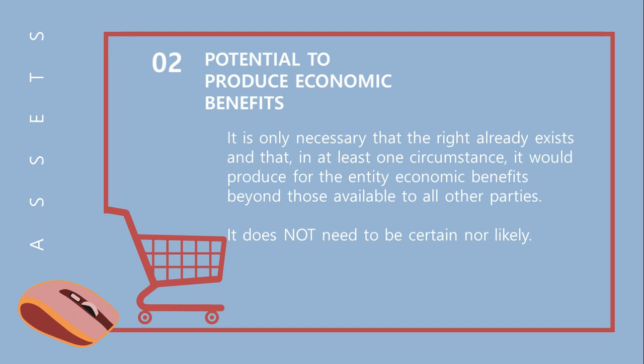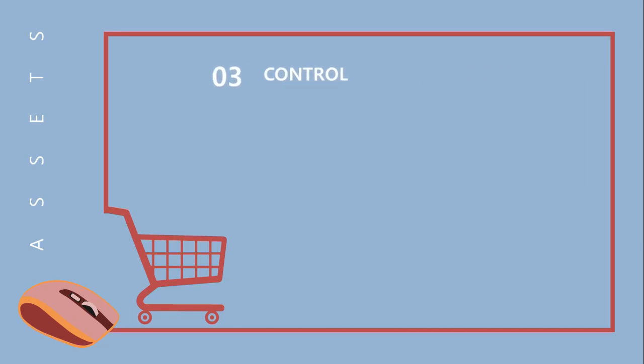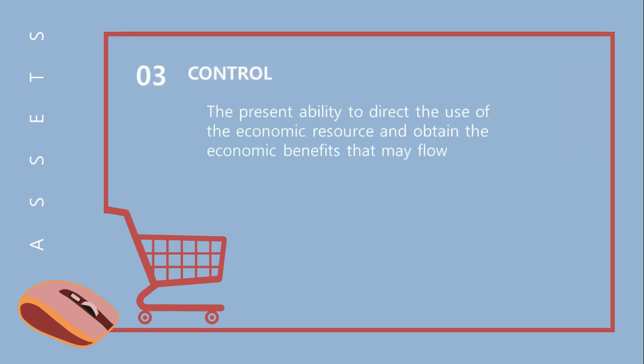To complete the triad of understanding an asset, let us talk about control. According to the framework, control is the present ability to direct the use of the economic resource and obtain the economic benefits that may flow from it. For example, if you own an item of property, plant, and equipment, then you have control over how the asset is to be used as well as control over the economic benefits you can get from that property, plant, and equipment.